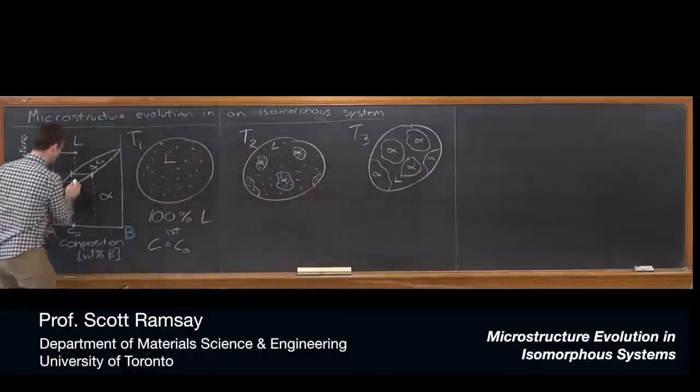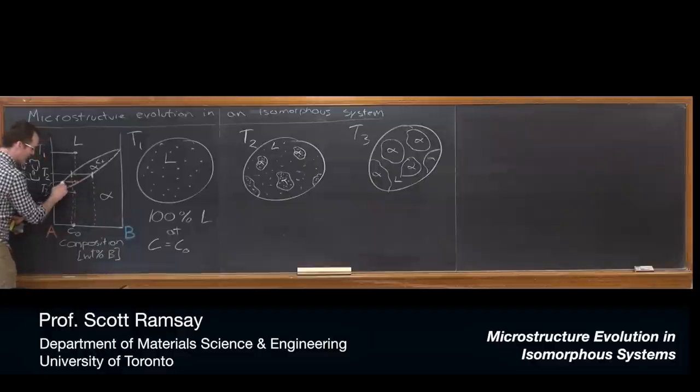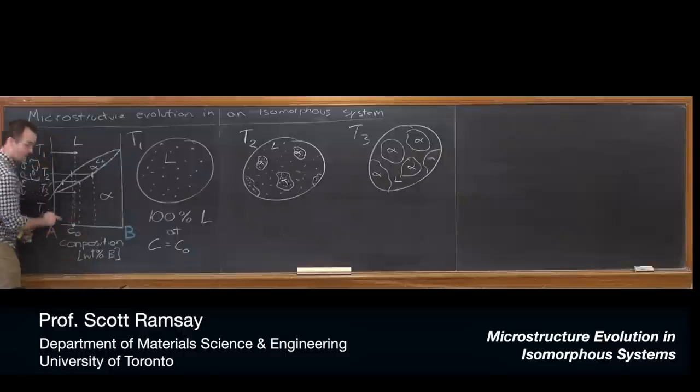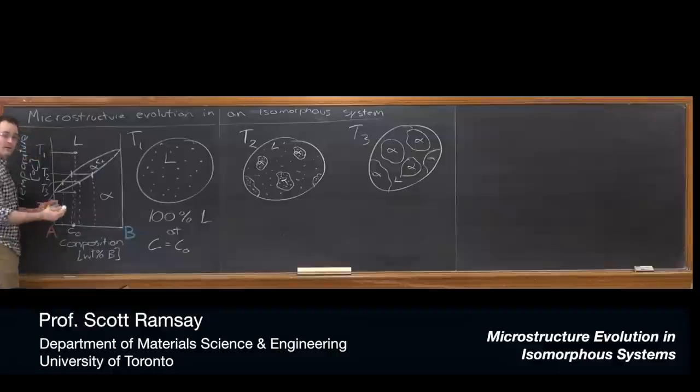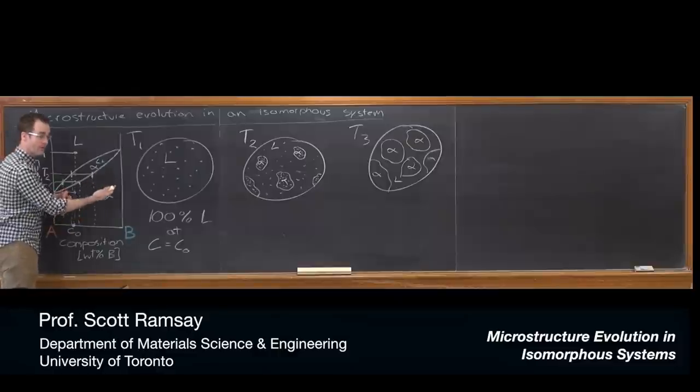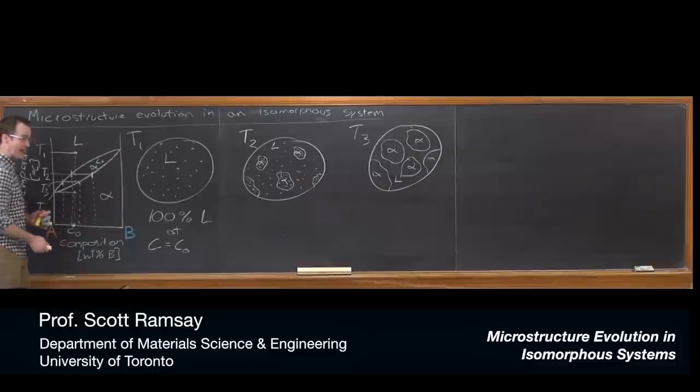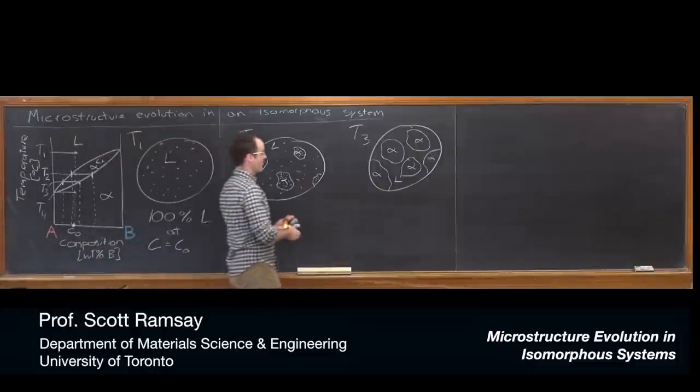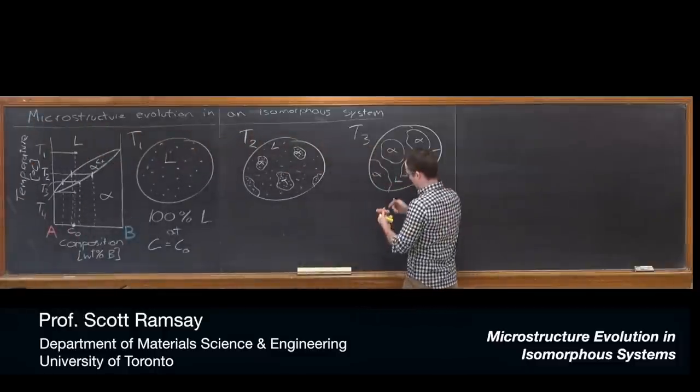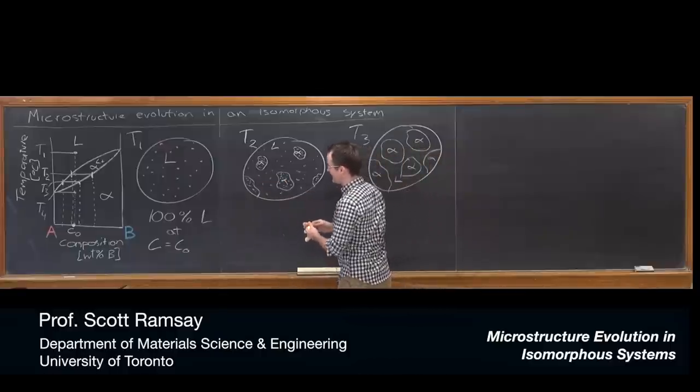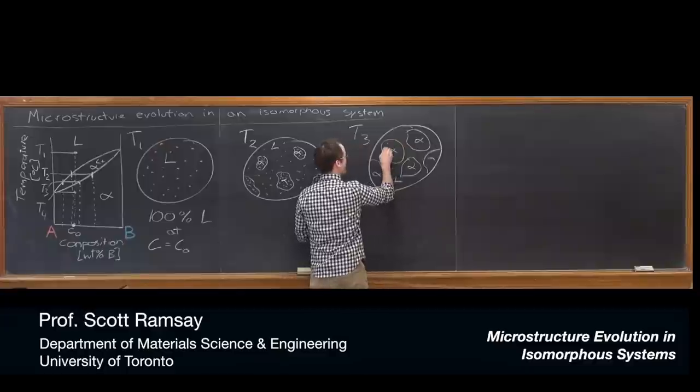And we can, again, we could describe it. We could draw a tie line, and we would say that the composition of the solid is going to be drawn by the intercept of the tie line with the solidus, the composition of the liquid with the interception of the tie line and the liquidus. So, again, now they're different. They're different from what they were at temperature 2, but as well, they're both depleted towards the A-rich side. There's more A, but there's a difference between the two. The solid still has a higher composition of B.